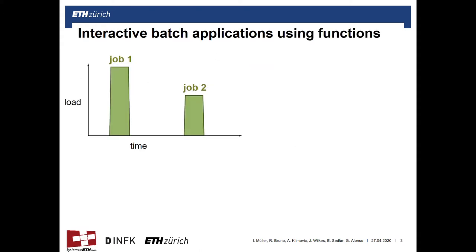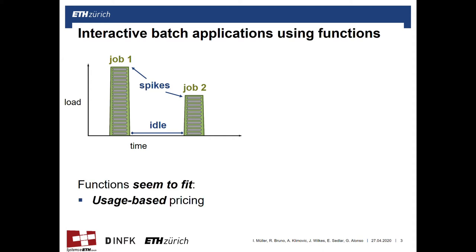People have used serverless functions quite successfully for this type of application, and if you think about it, it seems like a really good match. In batch applications there are individual jobs that represent workload spikes with a large idle time in between them. You can use serverless functions by spawning functions to run the different tasks in a particular job and simply not run any functions in the idle time. Because the pricing model of serverless functions is usage-based, you pay exactly for the resources that you need.